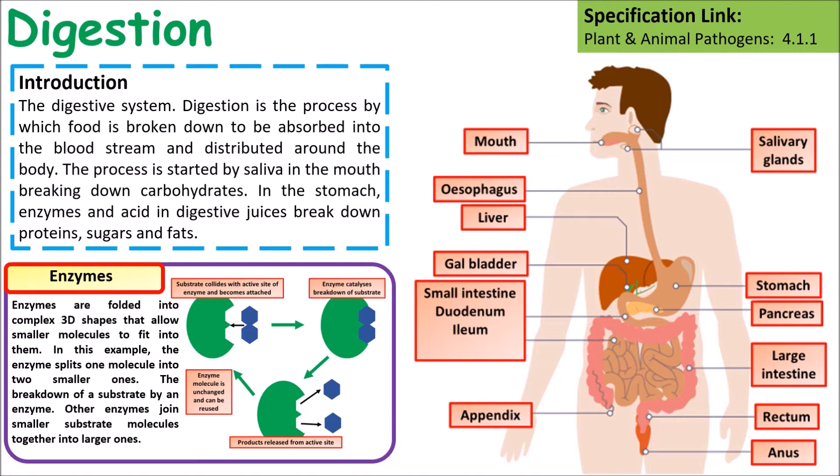The digestive system starts with the mouth at the top with the saliva glands, then the esophagus, then the stomach, then a small section called the duodenum where the pancreas and gallbladder connect, then the small intestines followed by the large intestines.